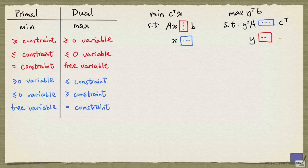The way to read this table is as follows. For example, if you have a greater-than-or-equal-to constraint in the primal problem, then in the dual problem the associated variable will be a non-negative variable. And if you have a variable in the primal problem constrained to be non-positive, then the corresponding dual constraint will be a greater-than-or-equal-to inequality.